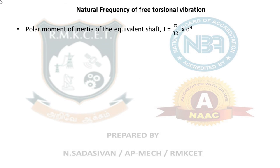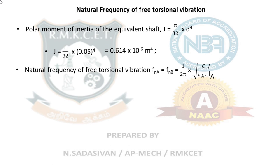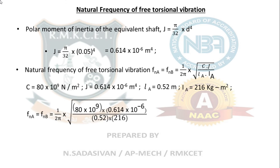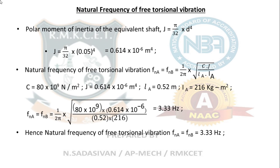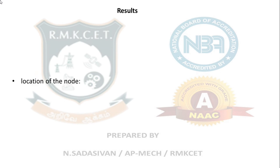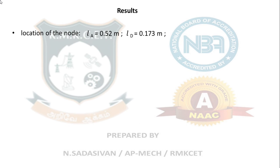For the natural frequency of free torsional vibration: polar second moment of area J = π/32 × D1⁴ = π/32 × (0.05)⁴ = 0.614×10⁻⁶ m⁴. Natural frequency fn = (1/2π) × √(C×J / (La × Ia)). Substituting C = 80×10⁹ Pa, J = 0.614×10⁻⁶ m⁴, La = 0.52 m, Ia = 216 kg·m², we get fn = 3.33 Hz. Results: La = 0.52 m, Ld = 0.173 m, and natural frequency = 3.33 Hz.